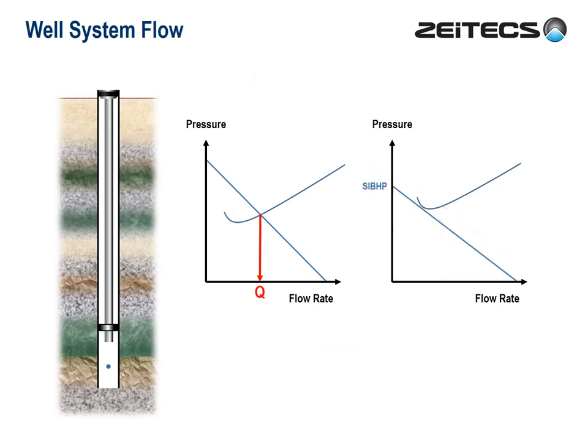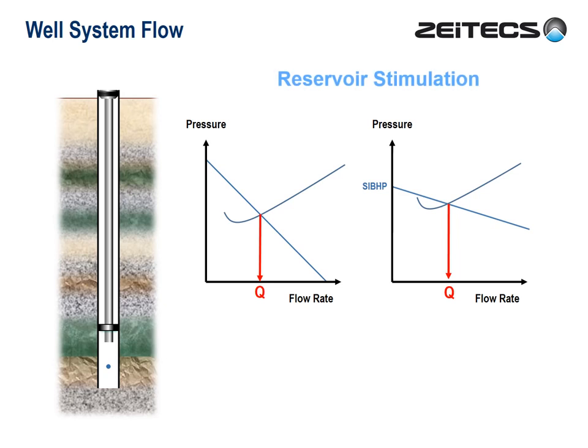Another thing we can do is reduce the gradient of the line. This is keeping the bottom-hole pressure the same, but this time increasing the productivity index. This is typically what we do with reservoir stimulation — matrix acidising, fracking, which of course is all the vogue, or various other chemical and heat treatments.